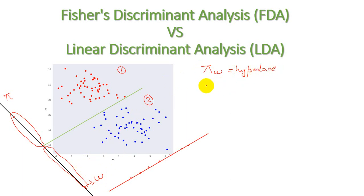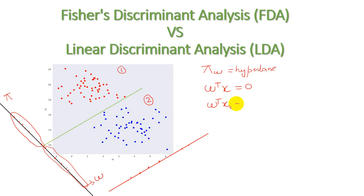In this scenario, Fischer Discriminant Analysis tells us that π(w), where w represents vector projection — which we have discussed separately — represents the dimension when we project a vector onto some dimension. So π(w) is equal to the hyperplane. According to the vector projection formula, w^T x = 0, where x represents original data points (the red and blue points) and x-dot represents the projected data points. The formula becomes w^T x_i = x_i^y. FDA discusses how to achieve maximum mean with minimum variance to classify our data.